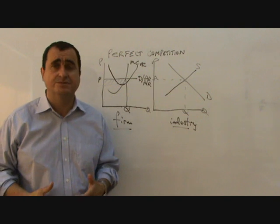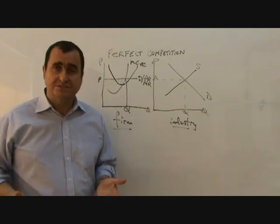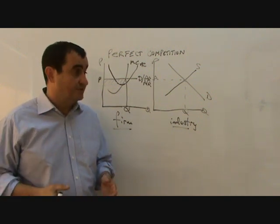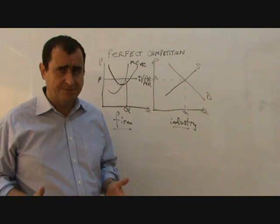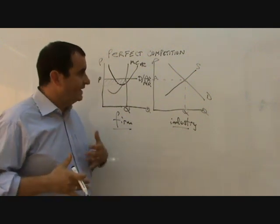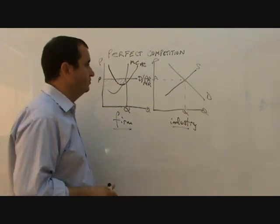is that new entrants would enter the market. There's no production techniques, there's no secrets, there's perfect knowledge, and there's no barriers to entry to stop them coming in. So new firms will enter the industry attracted by the abnormal profits.